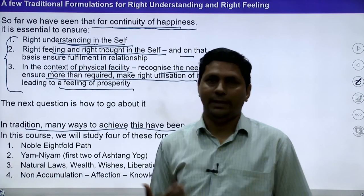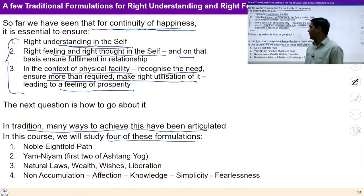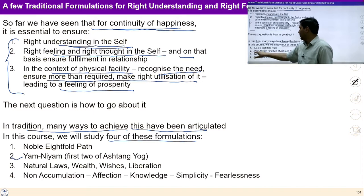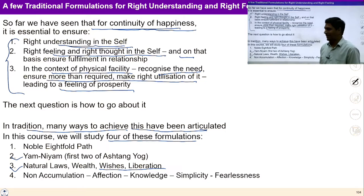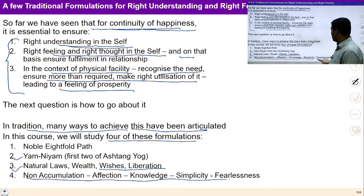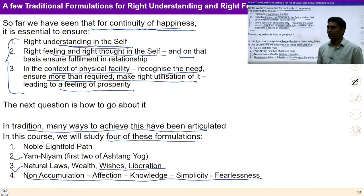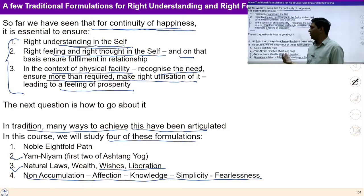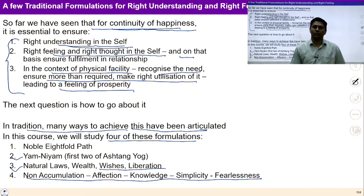In this lecture and the next, we are going to study those formulations. We would study the Noble Eightfold Path, then Emnium, then Natural Laws, Wealth, Wishes, Liberation — another formulation. Similarly, another formulation is Non-accumulation, Affection, Knowledge, Simplicity and Fearlessness. These four formulations we are going to study in this course.